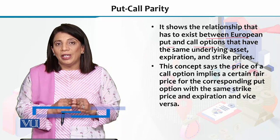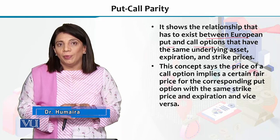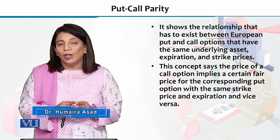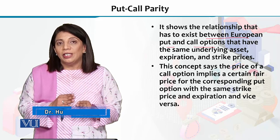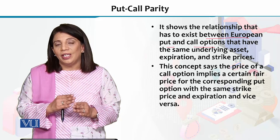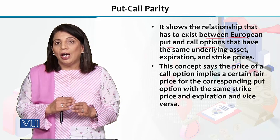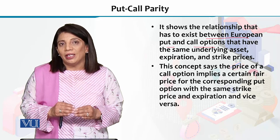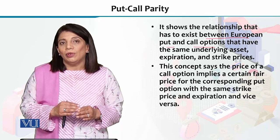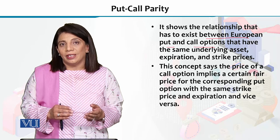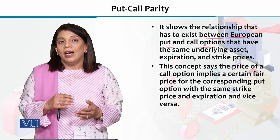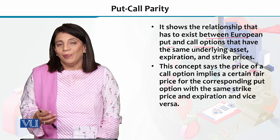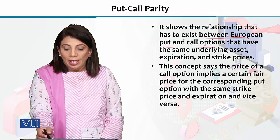I explained what is meant by a European option and what is meant by an American option. A European option means that it can only be exercised on the expiration date — the contract does not allow you to exercise it before that. But if your option is American style, then you can exercise it at any time.